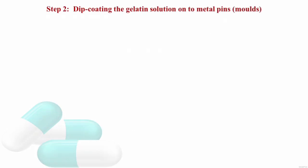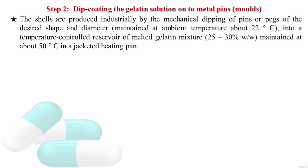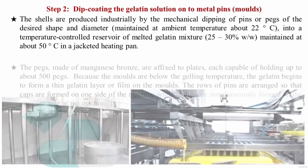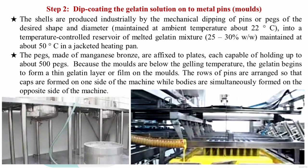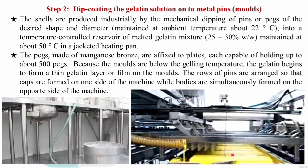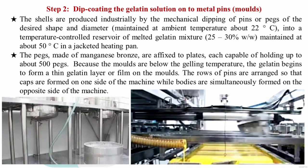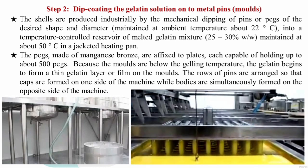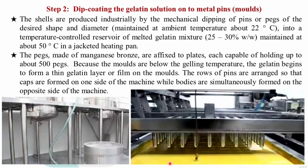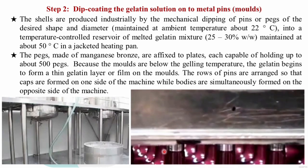Step 2: Dip coating. The shells are produced industrially by mechanical dipping of pins or pegs of the desired shape and diameter. These pins are maintained at 22 degrees Celsius and dipped into a temperature-controlled reservoir of gelatin maintained at 50 degrees Celsius with a concentration of 25 to 30 percent weight-by-weight. The pegs are made of manganese bronze and are affixed to plates; each tray is capable of holding about 500 pegs.